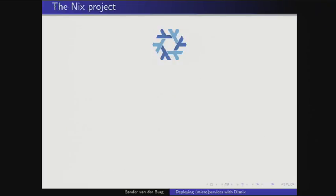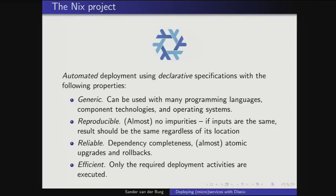Luckily, there is the Nix project, providing interesting deployment tools. In the Nix project, we support automated deployment using declarative specifications. Nix tools are generic — not bound to any programming language or component technology. You can use it for Java, Haskell, Node.js, Python, and so on. Nix also supports reproducible deployment: produce a configuration on your machine and easily reproduce the exact same configuration on a different machine if the inputs remain the same.